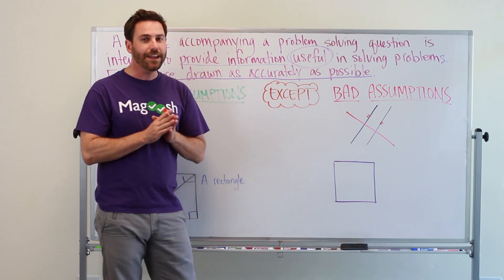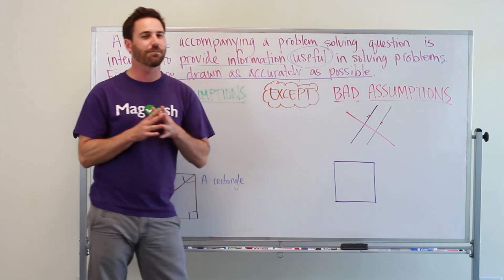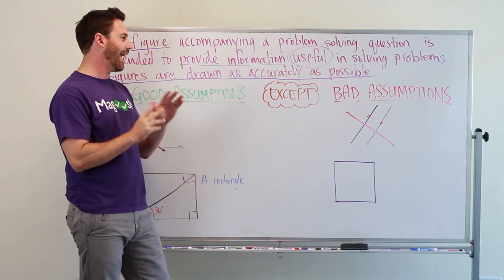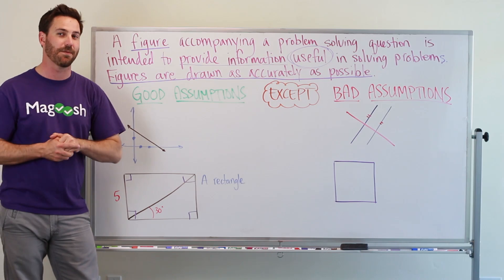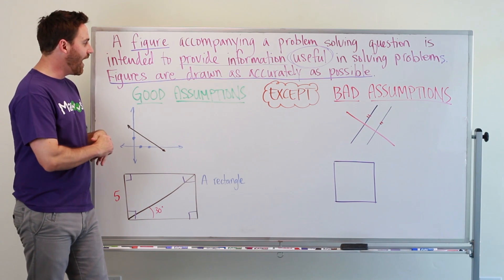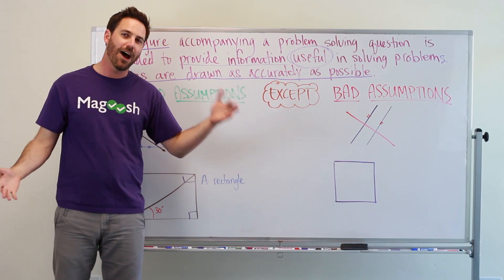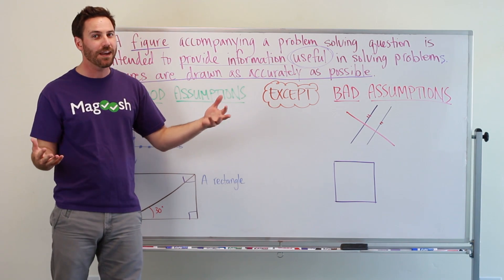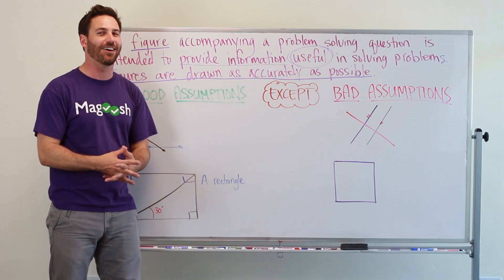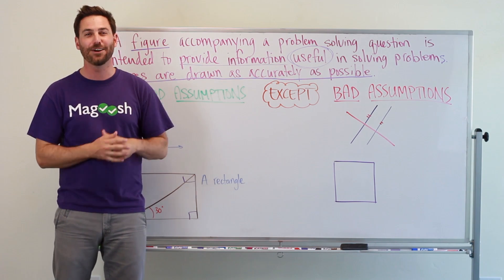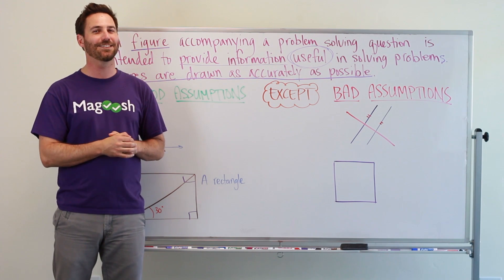So there is useful information you can derive from the figures on the test when doing problem solving questions. Just be careful about the assumptions that you make. There are bad assumptions and good assumptions to be made out there. If you have any questions about this concept, please put comments down below. If there's a video that you're hoping I will do, let me know. I can't read your mind, so you need to tell me, and I will record the video for you. Good luck studying for the GMAT, and be excellent to the universe.